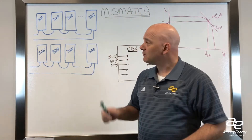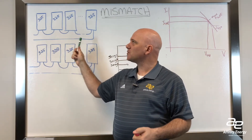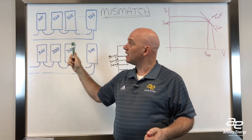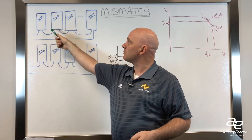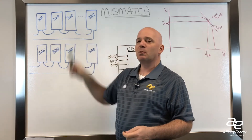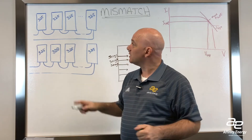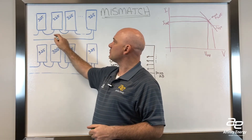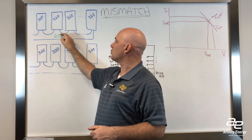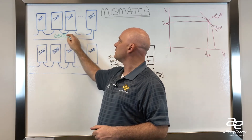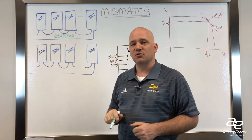The thing that I think we all know is normally you've got strings of modules wired together in series. For 325-watt modules, we've got 20 modules in a string — that makes the math a little bit easier. 20 modules at 325 watts is 6,500 watts of power from this particular string.